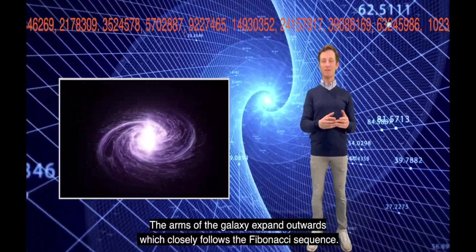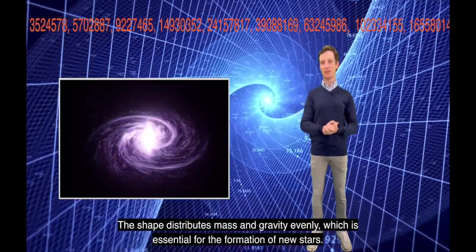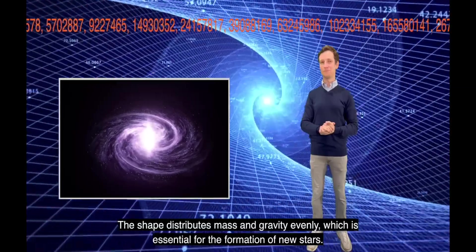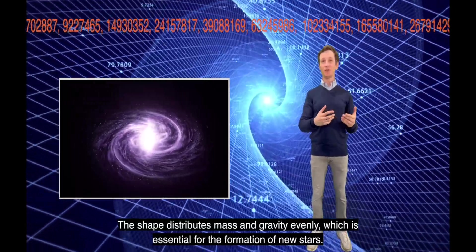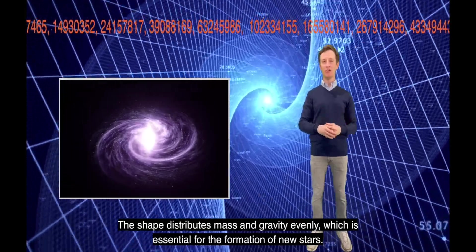The arms of the galaxy expand outwards, which closely follows the Fibonacci sequence. The shape distributes mass and gravity evenly, which is essential for the formation of new stars.